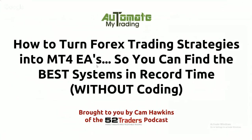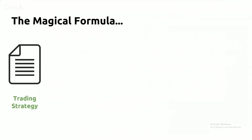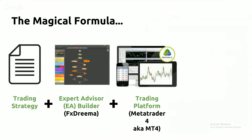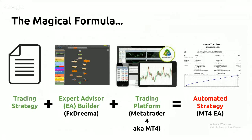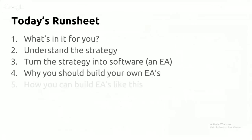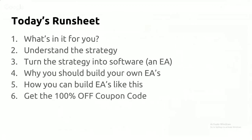So this week we're into something different. Today's run sheet: understanding the strategy, turning the strategy into an EA, why you should build your own EAs, how you can build EAs like this, getting the 100% off coupon code — note it has changed from last week — and helping me price and name this EA.